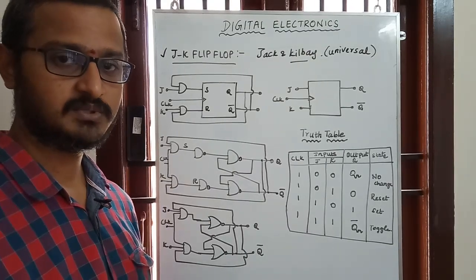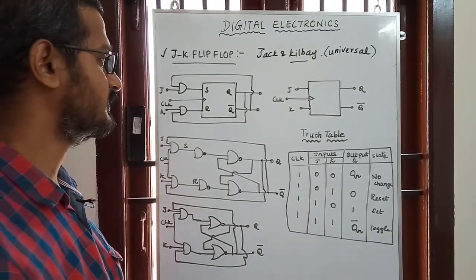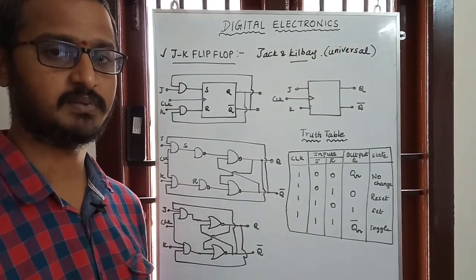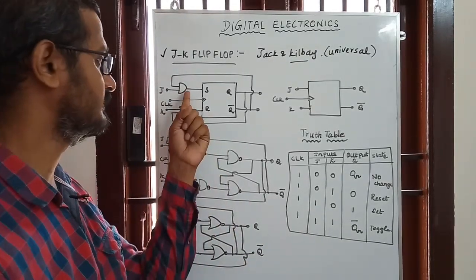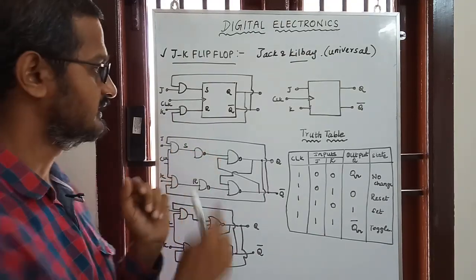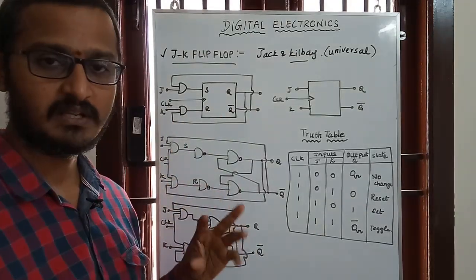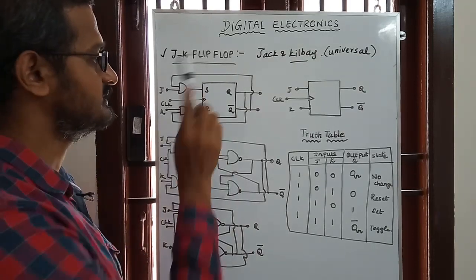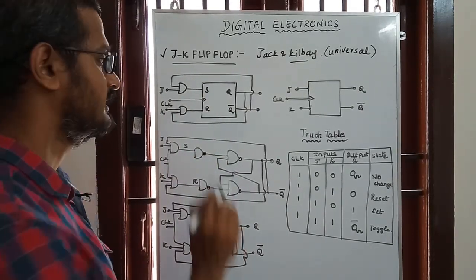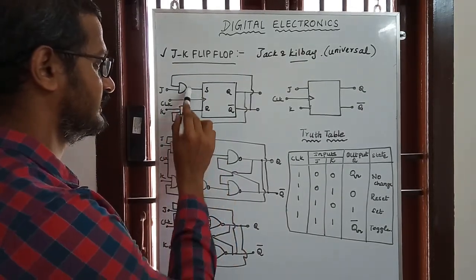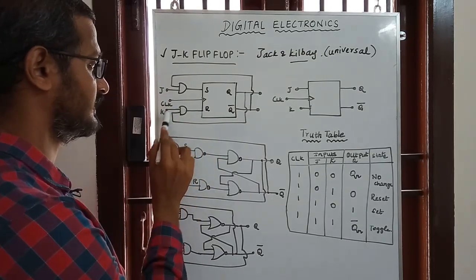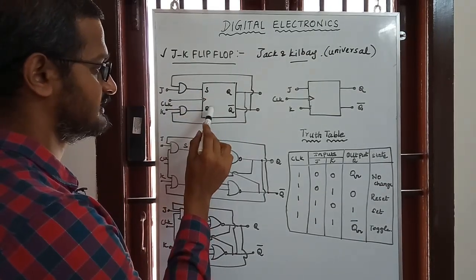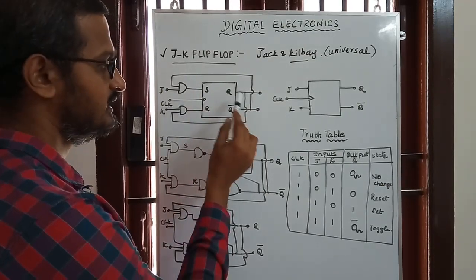This is the JK flip-flop. If you look at it, you can see two AND gates. Inside those two AND gates, you can see an SR flip-flop. Also note the clock pulse input — J and K are the inputs.